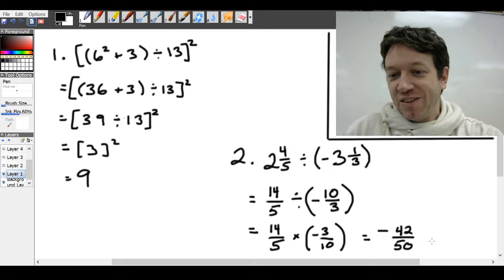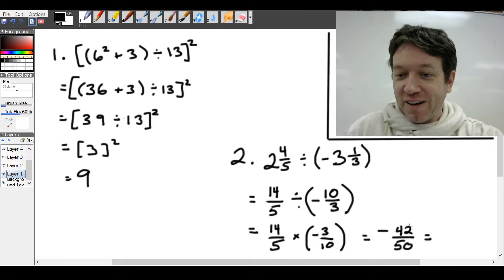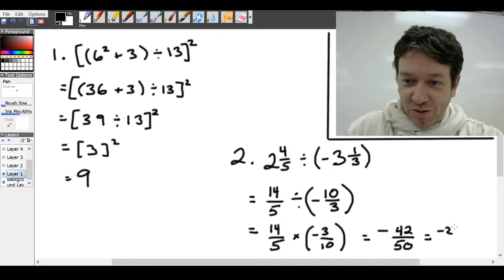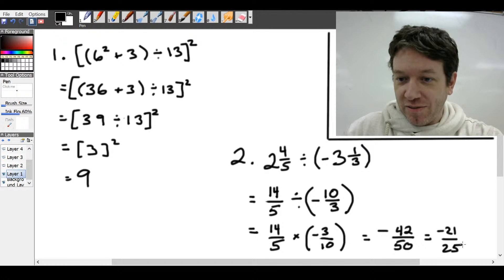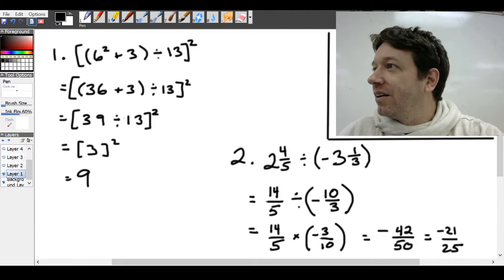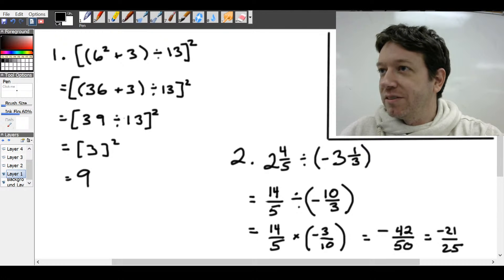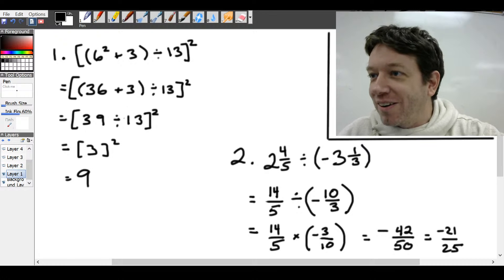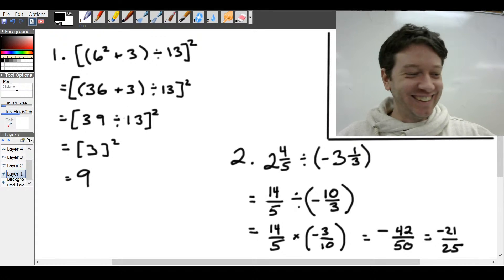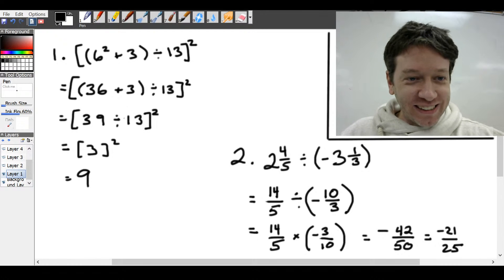and 5 times 10, which is 50. You can immediately see those are both even numbers, so you can divide top and bottom by 2 to reduce it to minus 21 over 25. I just saw hi in the chat. Hi. All right, so let's do some more examples.